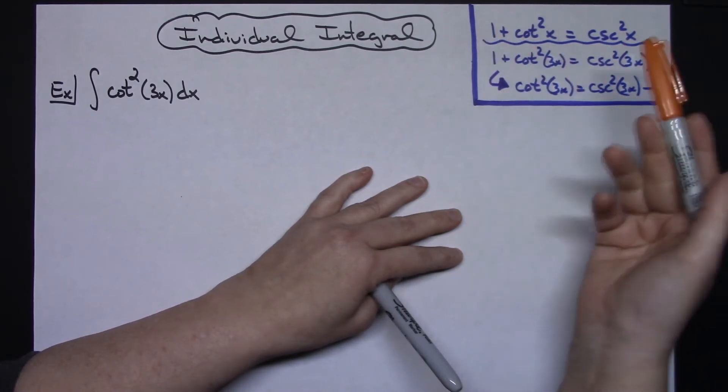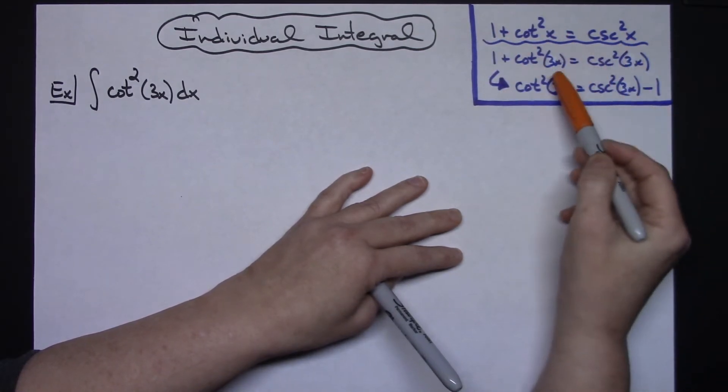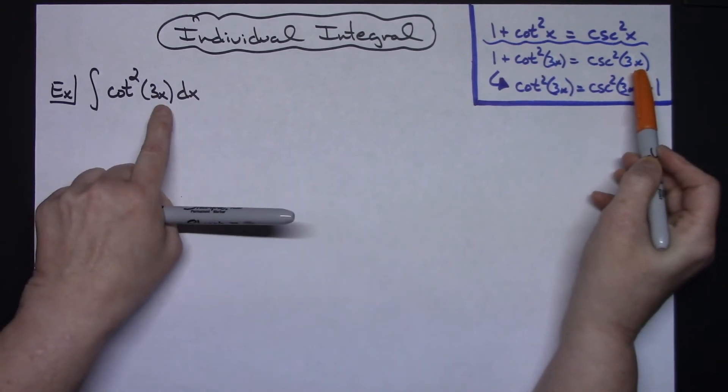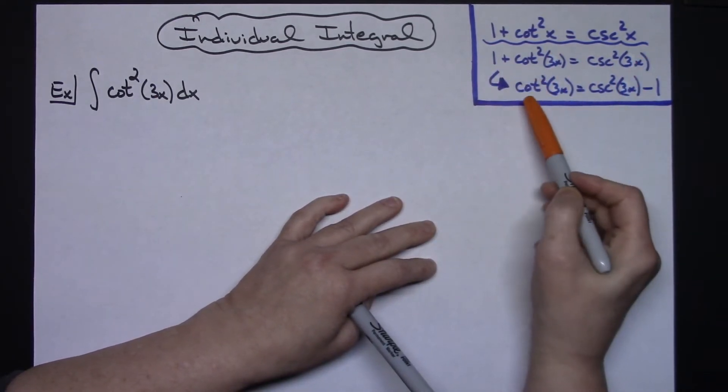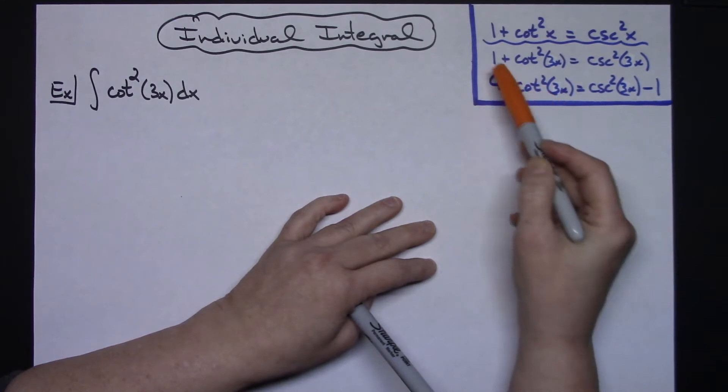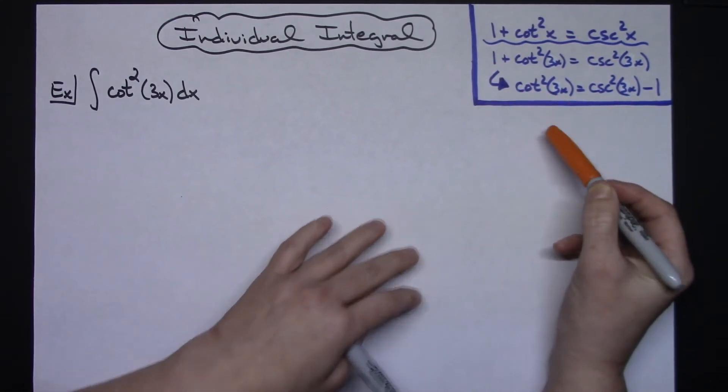This identity also would follow suit if I would change those x's to 3x, which I have here. Then we can take this quantity and solve for cotangent squared of 3x by subtracting 1 from both sides and then we have an equivalent identity.